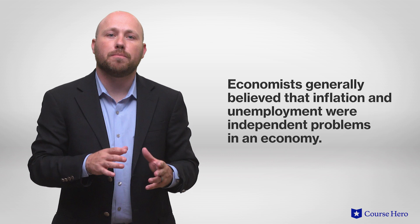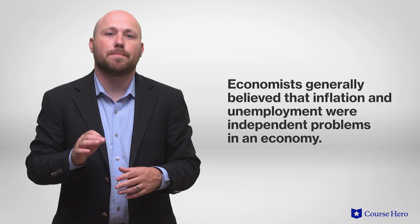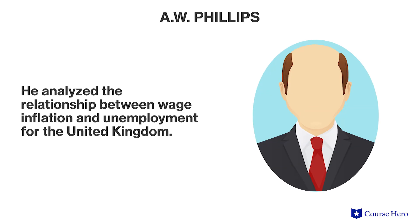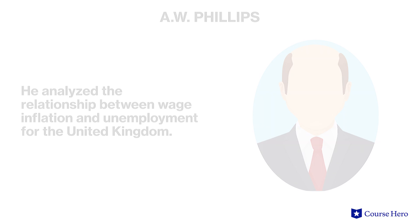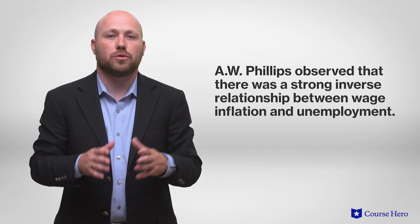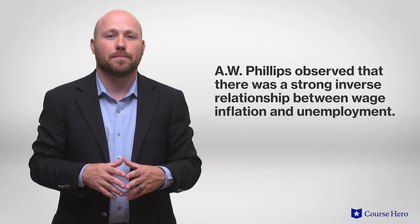In the first half of the 20th century, economists generally believed that inflation and unemployment were independent problems in an economy. In 1958, British economist A.W. Phillips challenged this assumption when he analyzed the relationship between the increase in wages over time, known as wage inflation, and unemployment for the United Kingdom. He observed that there was a strong inverse relationship between wage inflation and unemployment.